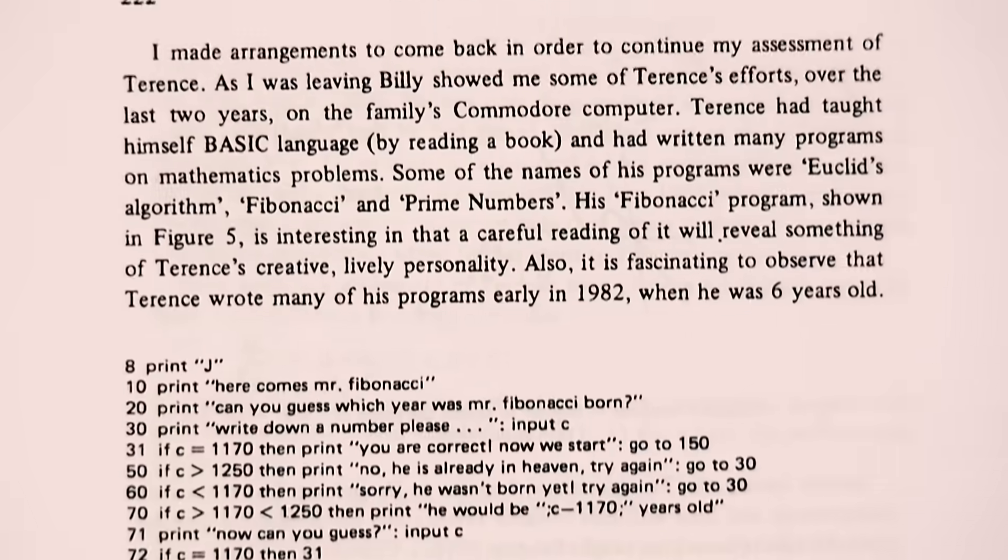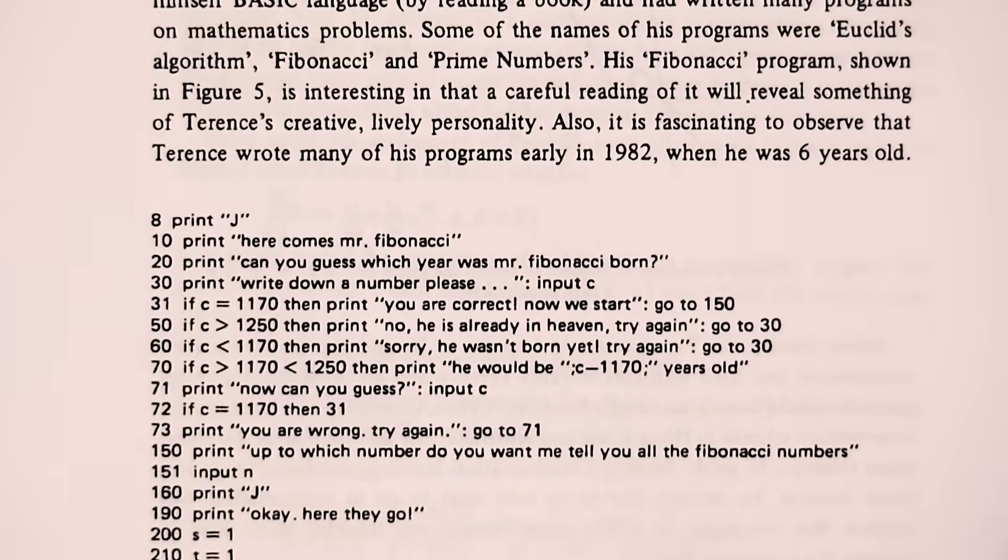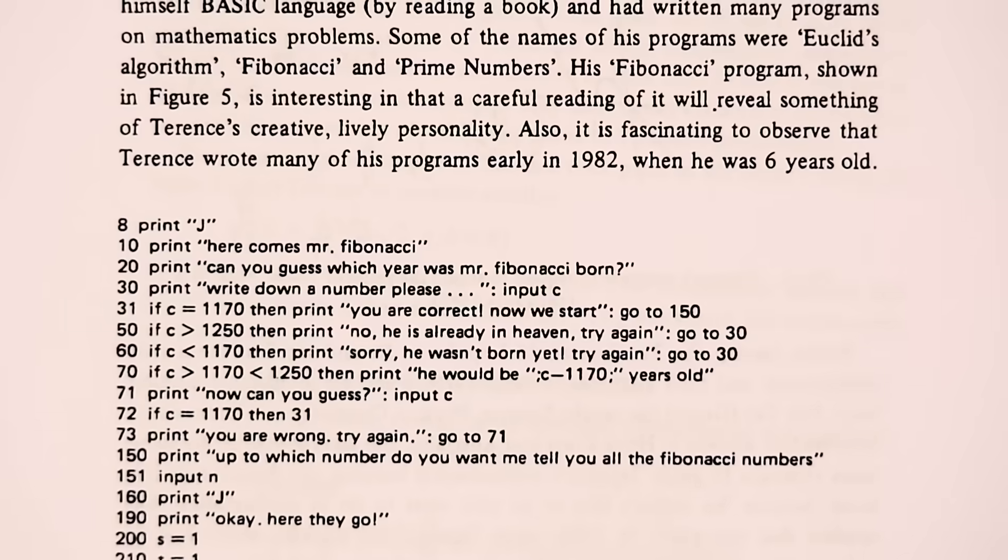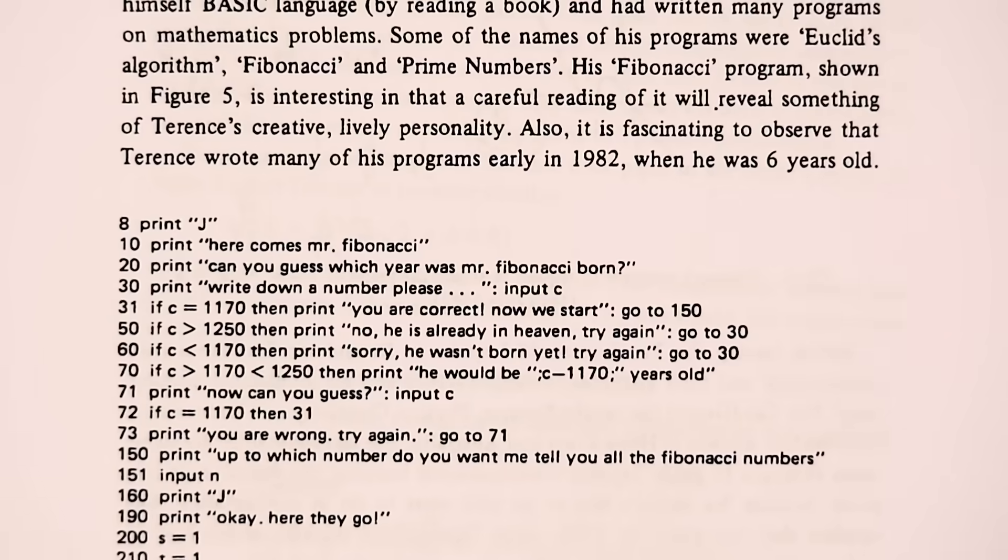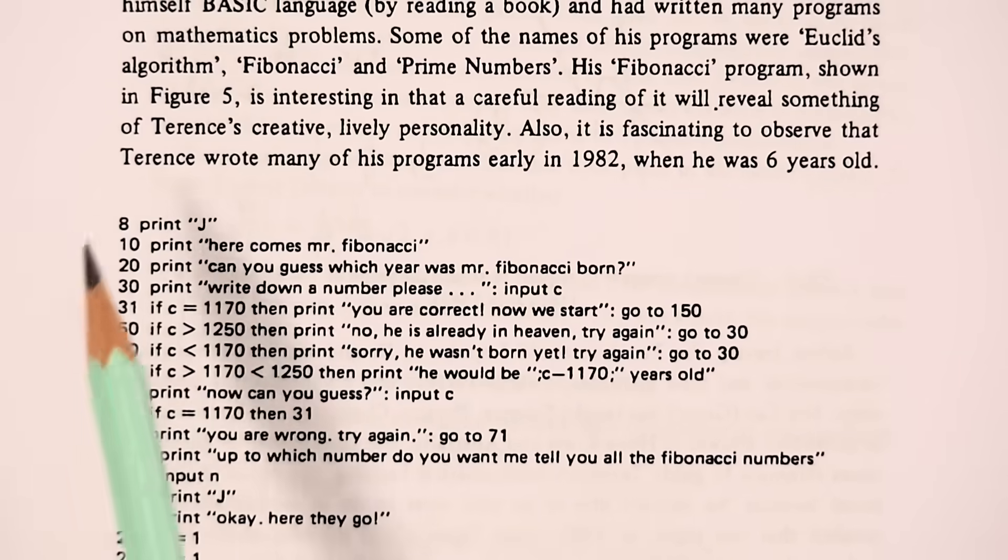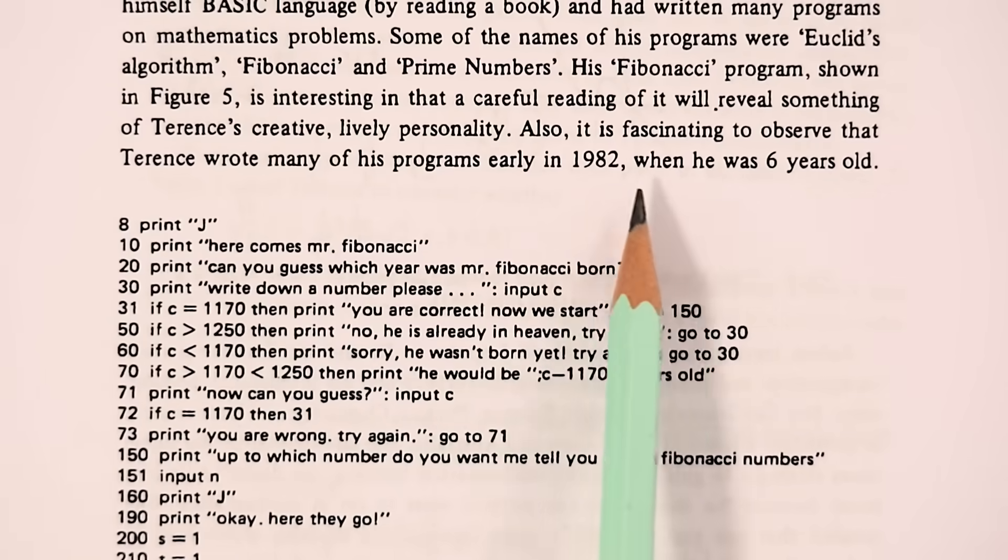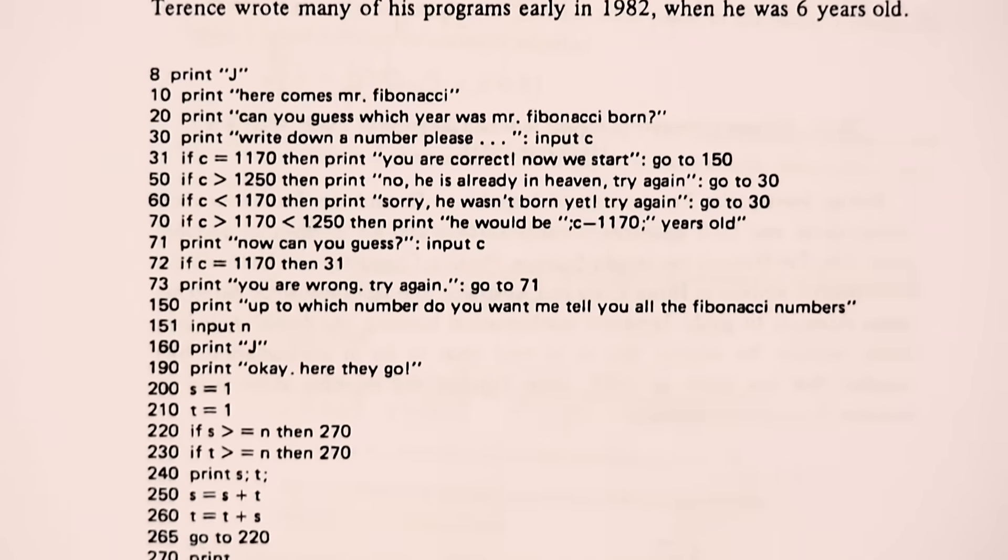And at the end of this first visit, Clements was shown one of Terence's programs. It was called Fibonacci and actually contains plenty of humour. Apparently Terence wrote many of his programs when he was just six years old. So let's take a look at Fibonacci.